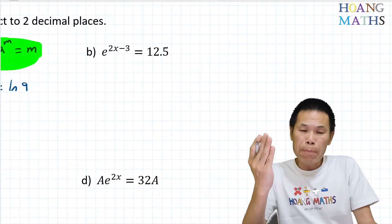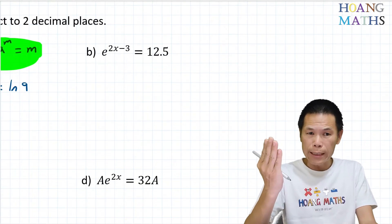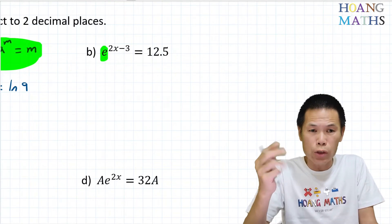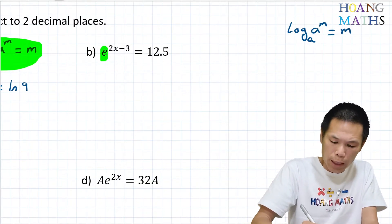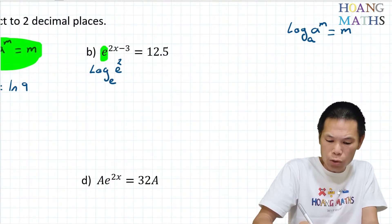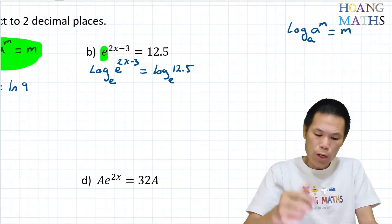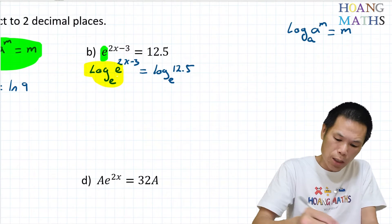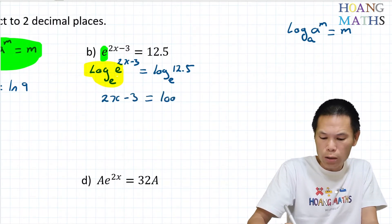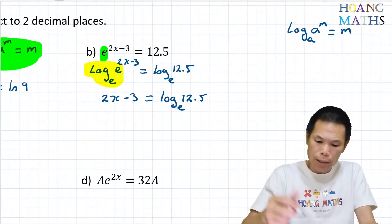Let's do part b. Same process. We need to bring the 2x minus 3 down, so we need to take log on both sides. Because of e to the power 2x minus 3, we take log base e again. Using the log law: log of a to the power m equals m. So log base e of e to the 2x minus 3 equals log base e of 12.5. These two cancel out, giving 2x minus 3 equals log base e of 12.5.